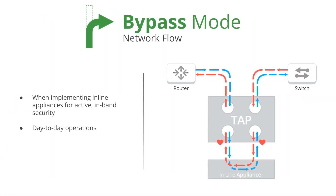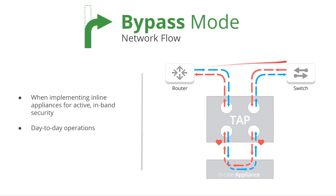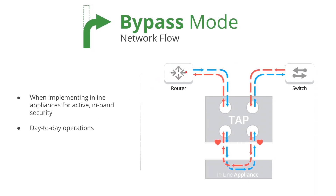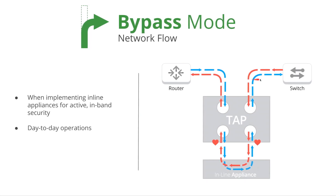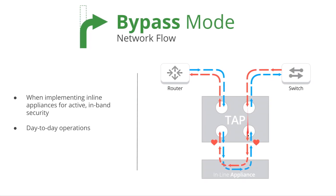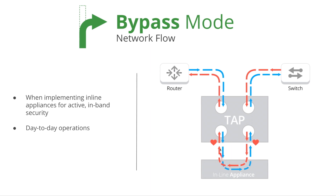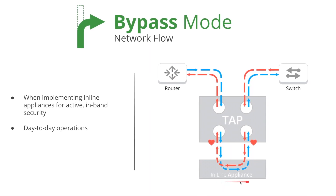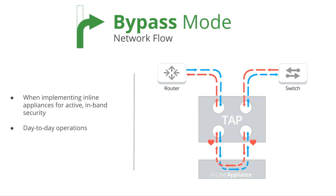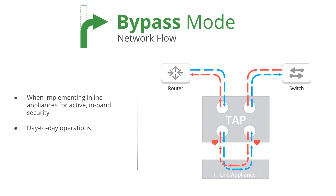Bypass mode. Again, here you see the router and switch plugged into port A and B. Here you see the traffic actually flowing through the inline appliance to the switch in blue, and then back through the switch through the inline appliance to the router in red. This is because the inline appliance has to actively do things like block traffic, protecting the network — whatever the tool is, it needs to change the traffic that is flowing through it.